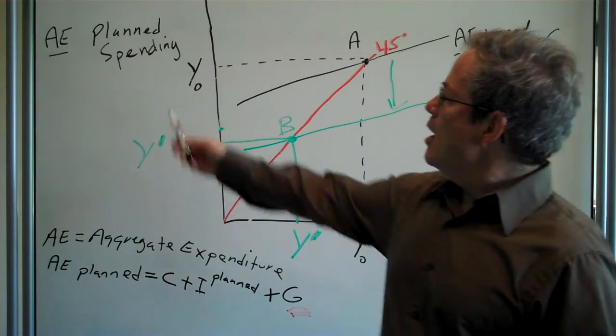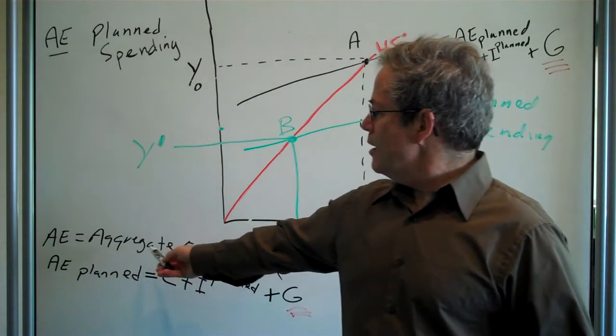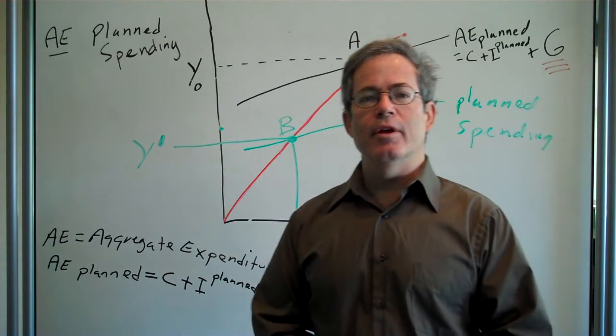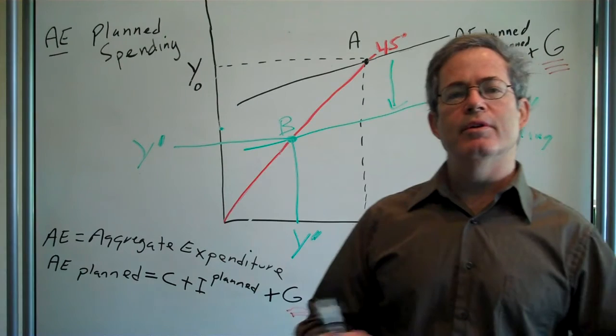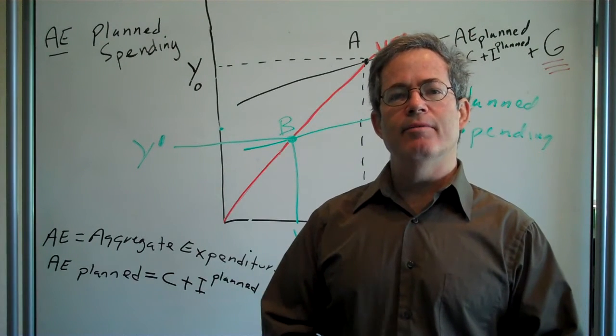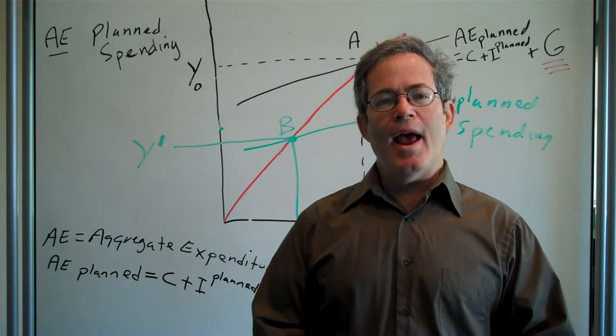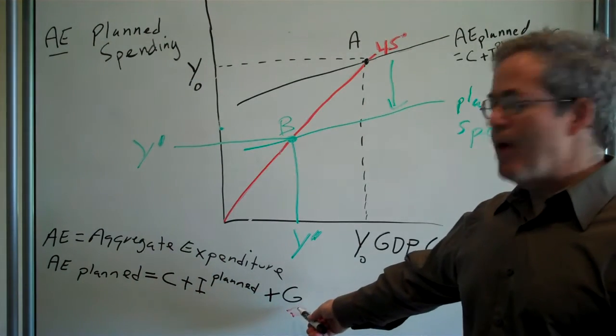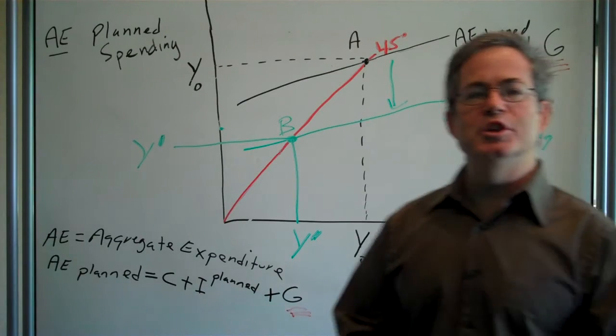Now remember that aggregate expenditure, planned aggregate expenditure in our model so far is equal to consumption plus planned investment. But now we want to add another very important component and that is government expenditure, G.